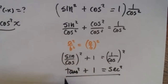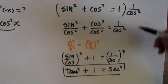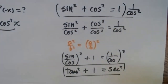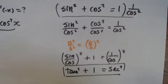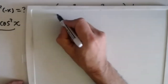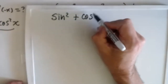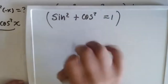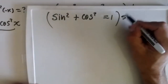This is another identity we can get from the first Pythagorean identity. Same as I divided by cosine squared, I'm going to begin with the same identity: sine squared plus cosine squared equals one. Now I'm going to divide this fundamental identity by sine squared.